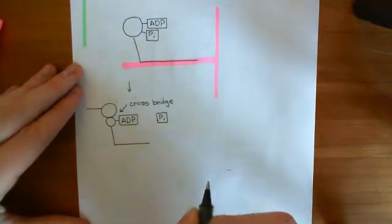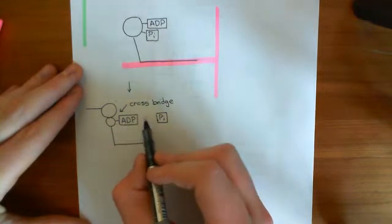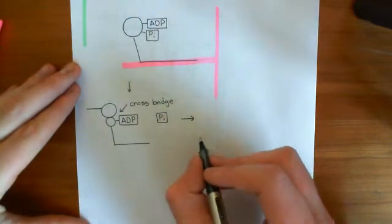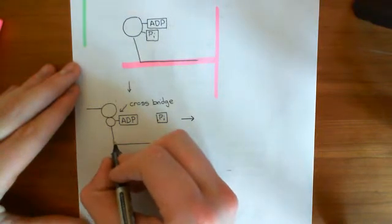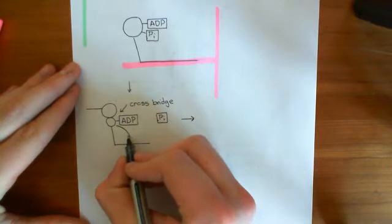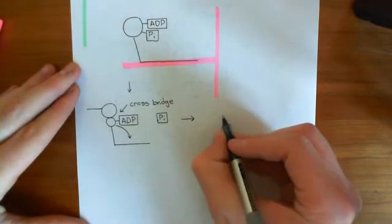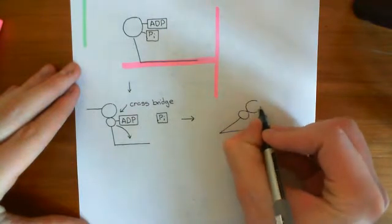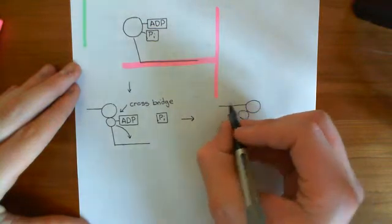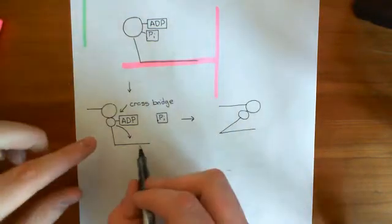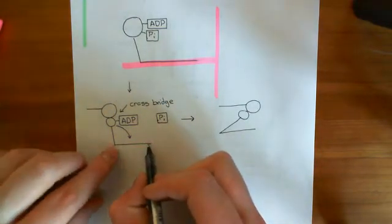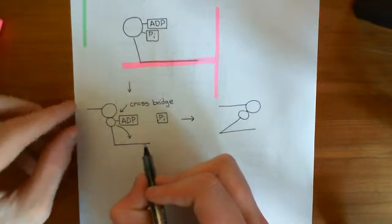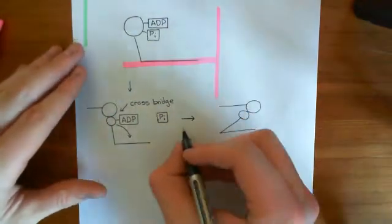The next step is what is known as the power stroke. The myosin head is going to break off from the ADP — it's going to drop the ADP — and when it does so, it's going to perform what's known as a power stroke, which is basically a change in conformation of the myosin head. It's going to pull the myosin head back down towards its fibrous tail. So the myosin head undergoes a marked change in conformation and pulls the actin monomer along with the rest of the actin filament in that direction. That is known as the power stroke.